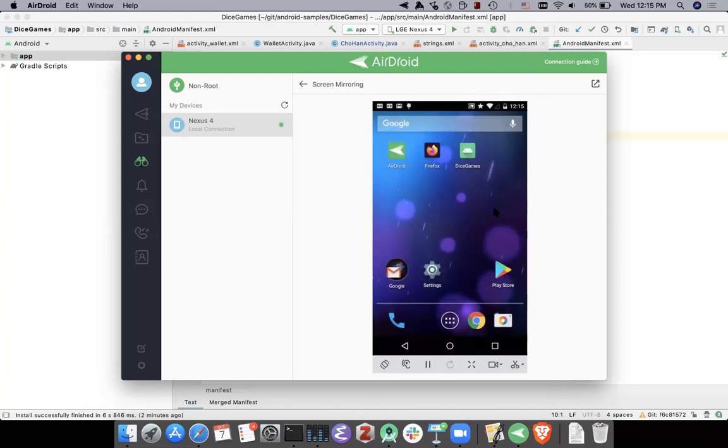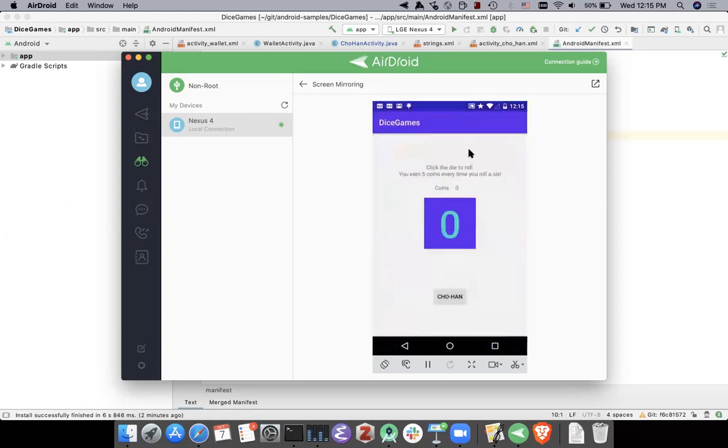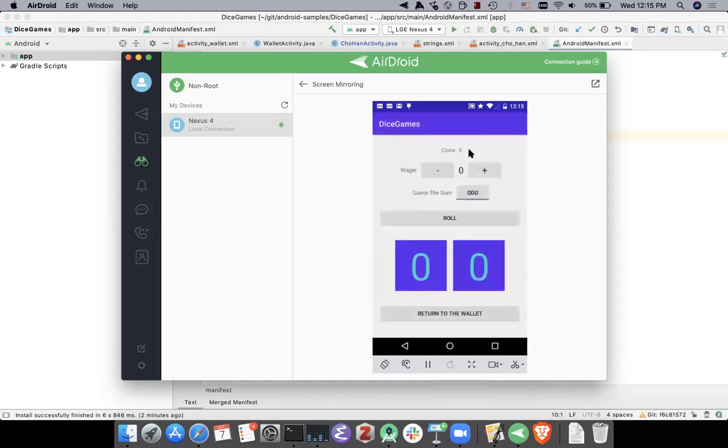What happens when I click the Dice Games button? It starts here on my wallet activity. Now, let's say I play around a little bit, gain some coins, and go to the Shrine activity.